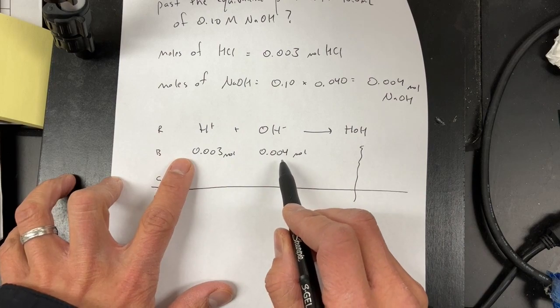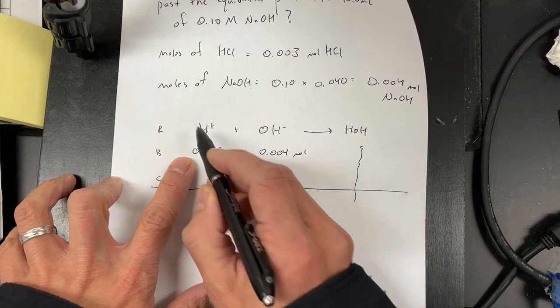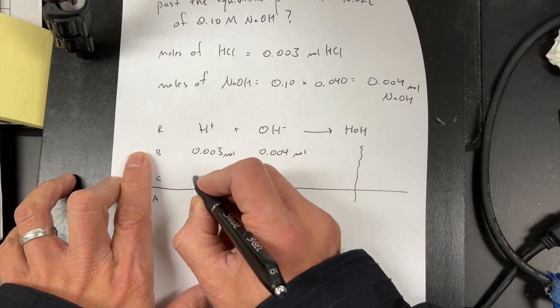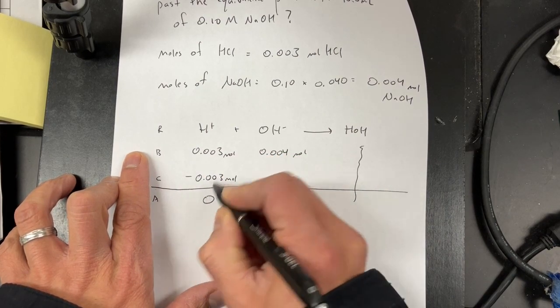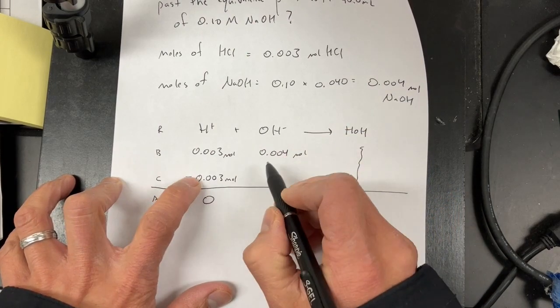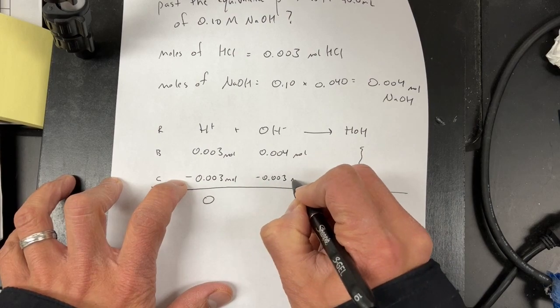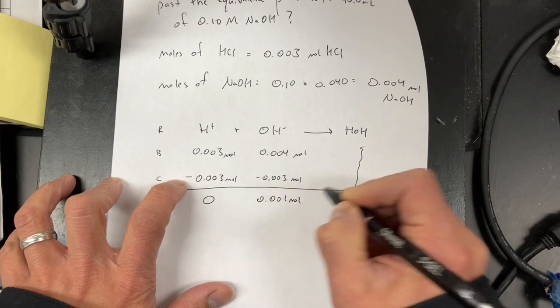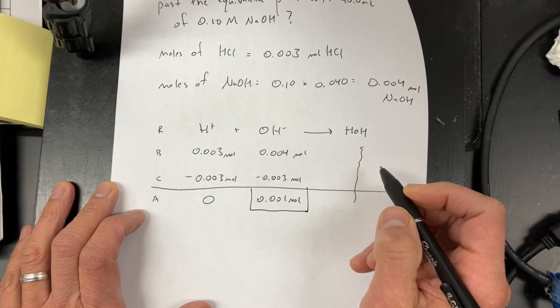And now, what is my limiting reactant? Well, this one, I have less of, and therefore, this one I'm going to have totally disappear. So, that becomes 0.004, I've used up all my H+. OH-, it's a 1 to 1 ratio, so I can only go down by 0.003. So, now this is 0.001 moles. And now, this is what I'm going to use to calculate my pH.